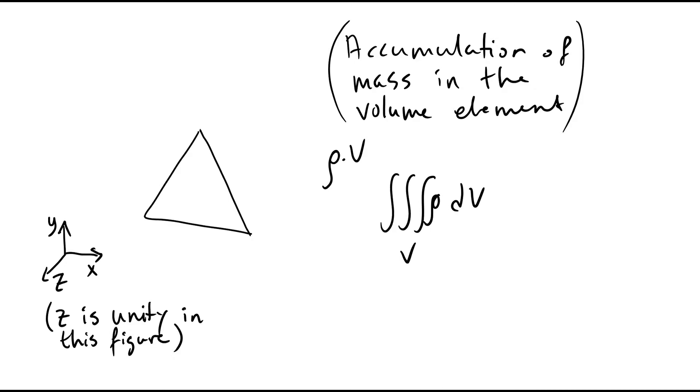The accumulation of mass in the volume element is simply given by the time rate of mass. So we can write ∂/∂t in front of this integral expression. This is the accumulation of mass in the volume element.